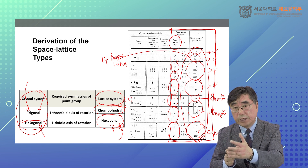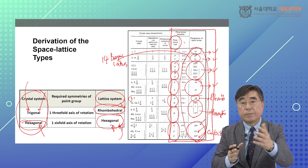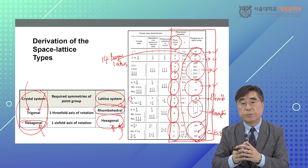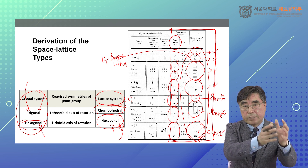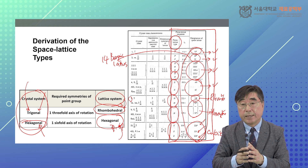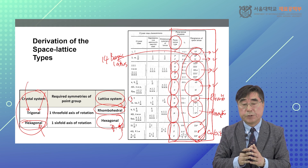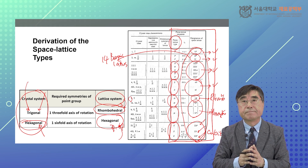In doing that, there can be more than one lattice point in a unit cell, which is what we call the 14 Bravais lattices. This is the end of the lecture. Thank you very much for listening.